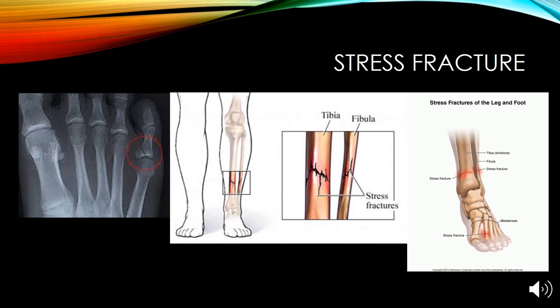Stress fractures are small cracks in the bone that are often caused by overuse. They are mostly seen on the lower extremities since these are the weight-bearing bones of the body. If stress fractures are not healed properly, this can lead to chronic pain and additional stress fractures.